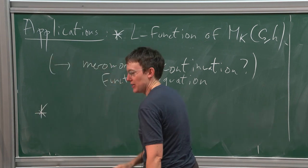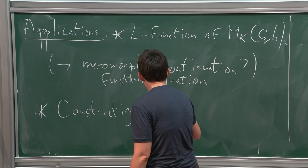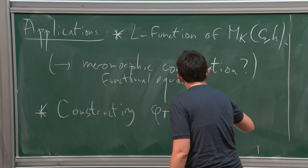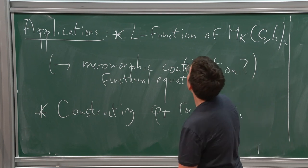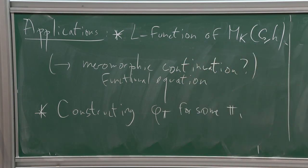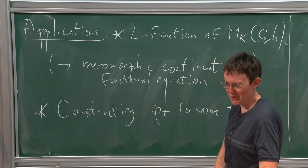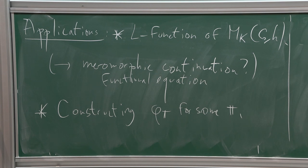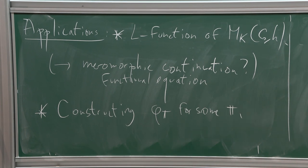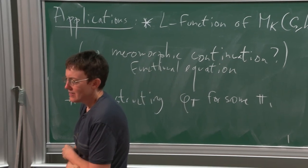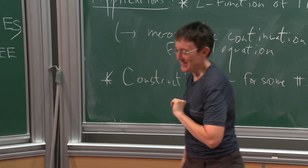The second possible application is constructing cases of global Langlands, by constructing φ_π for some π. You can say: I want to construct global Langlands, so I start with a group that has a Shimura variety — not GL_N. I take a π and look at the π_f-isotypical part. I choose H so that ρ_μ is a standard representation and a_π equals 1. That means you choose a signature like (0,N) to a power times (1, N-1). You also have to be able to calculate a_π, and π has to be cohomological.